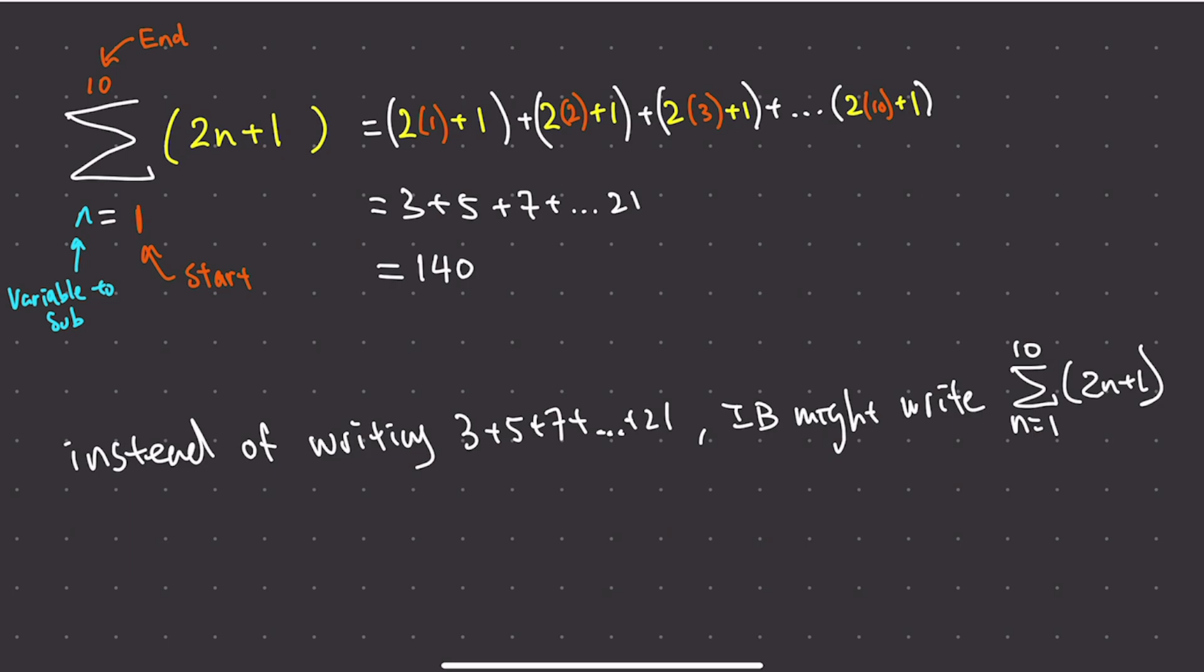In the IB when we're talking about arithmetic series, as in we're adding up a group of numbers - another way of writing this, so 3 plus 5 plus 7, we know that this is an arithmetic series because it's adding 2 every single time. Instead of writing it like this, they might write it like this for you.